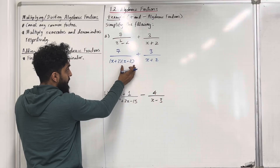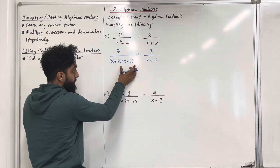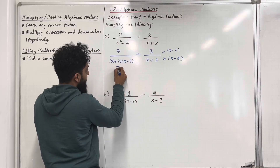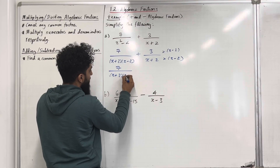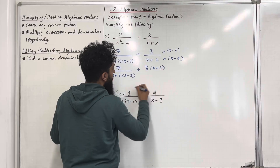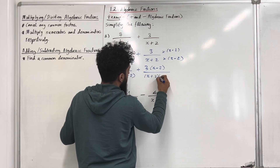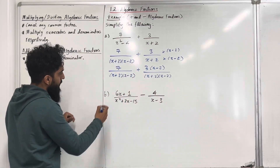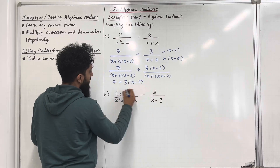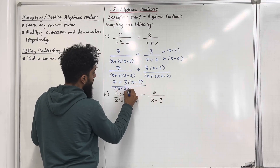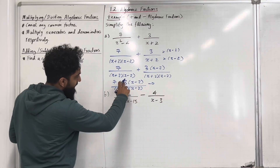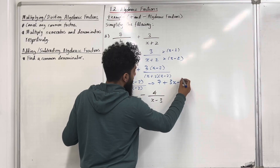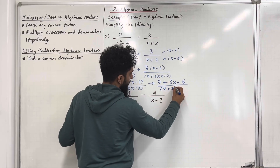Comparing the denominators, we see that x plus 2 is common, however the first fraction has an additional x minus 2. So we need to multiply the second fraction top and bottom by x minus 2. We end up with 7 over x plus 2 times x minus 2, plus 3 times x minus 2 over x plus 2 times x minus 2. Now we have a common denominator, so we can write this as a single fraction: 7 plus 3 times x minus 2, all over x plus 2 times x minus 2. Expanding the bracket gives 3x minus 6.